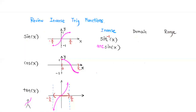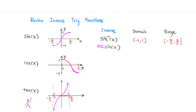So the domain of this restricted sine function is negative pi/2 to pi/2. That will become the range for the inverse sine function. And the range for this sine function is negative 1 to 1, which will become the domain for the inverse sine function. So inverse sine of x has domain negative 1 to 1 and range negative pi/2 to pi/2.